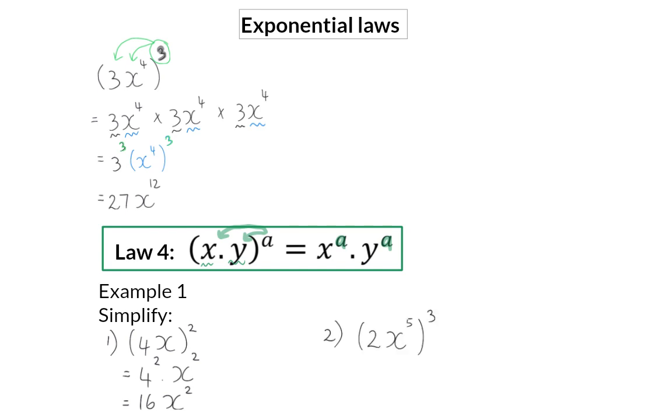In the second example, we once again have two base numbers that are multiplied and raised to the power of 3. So we will have 2 to the power of 3 multiplied by x to the power of 5 to the power of 3. Next, 2 to the power of 3 is 8. And for x to the power of 5 to the power of 3, I am going to use the third law, which states that I multiply the exponents, and that will give me 15.